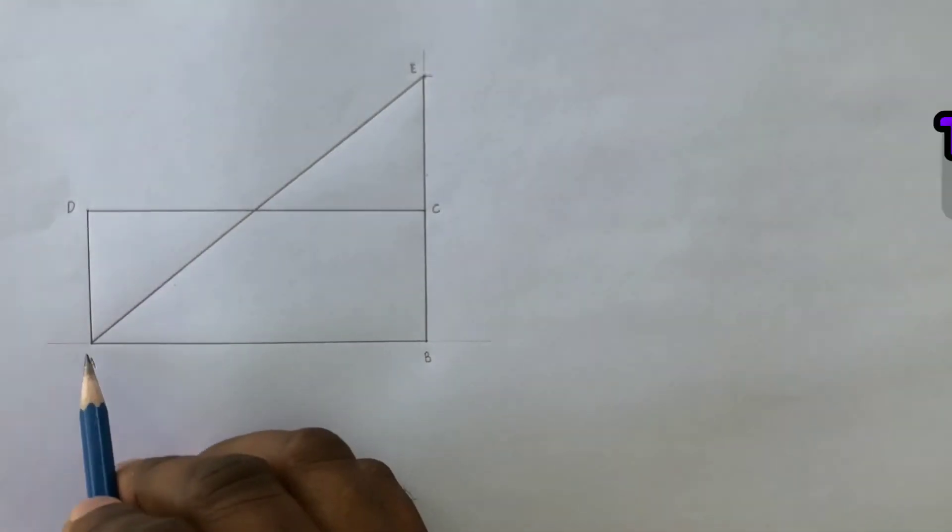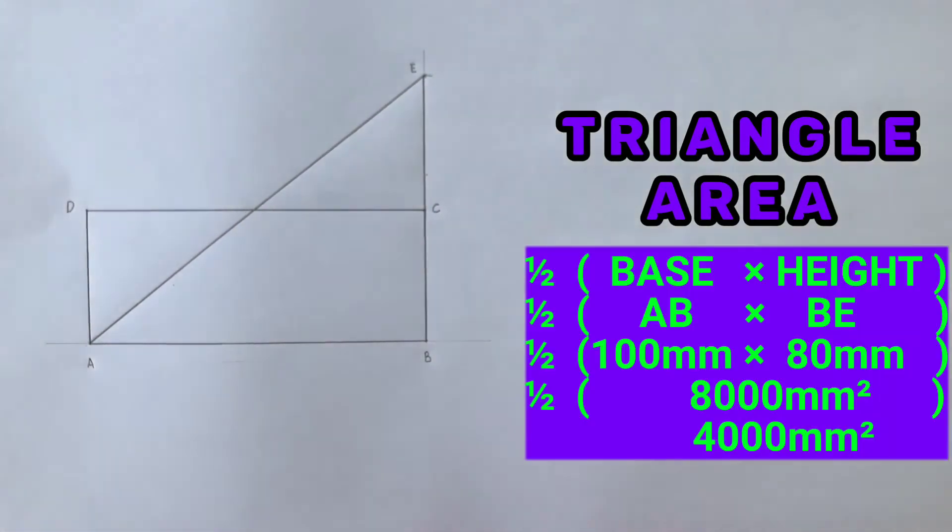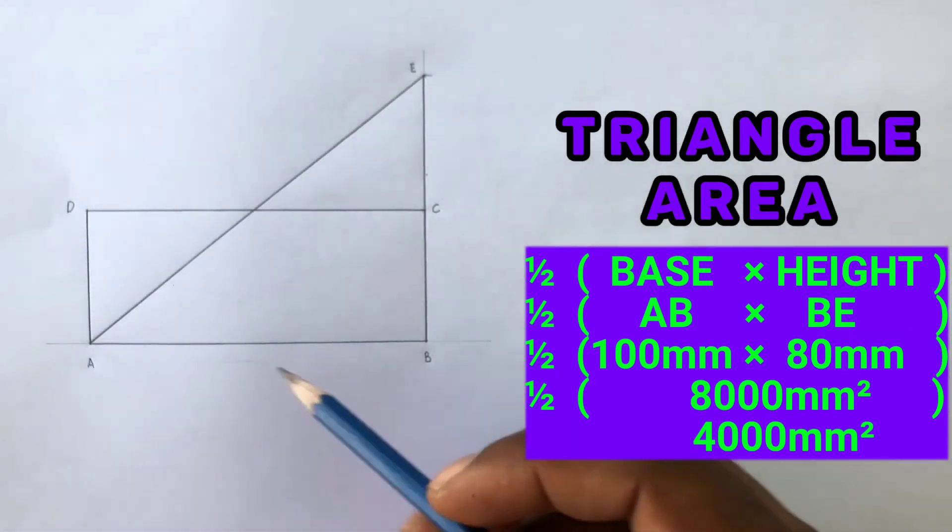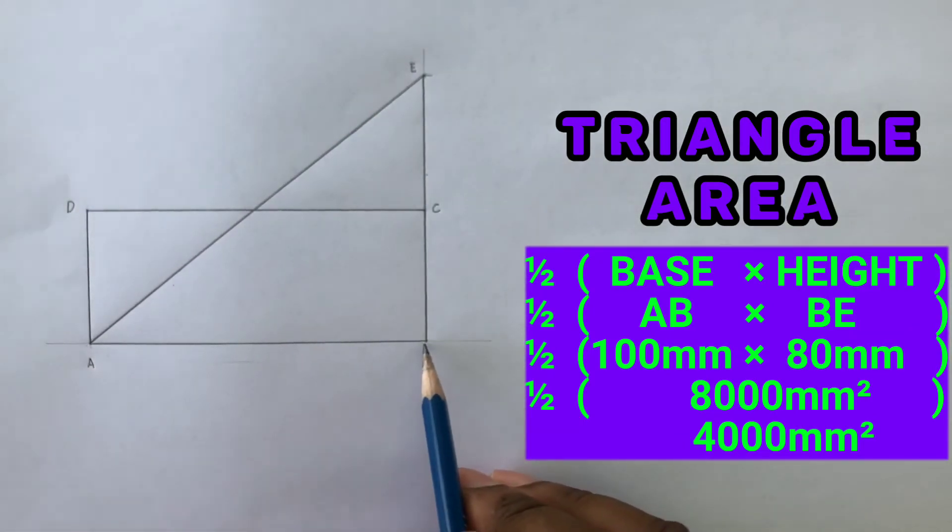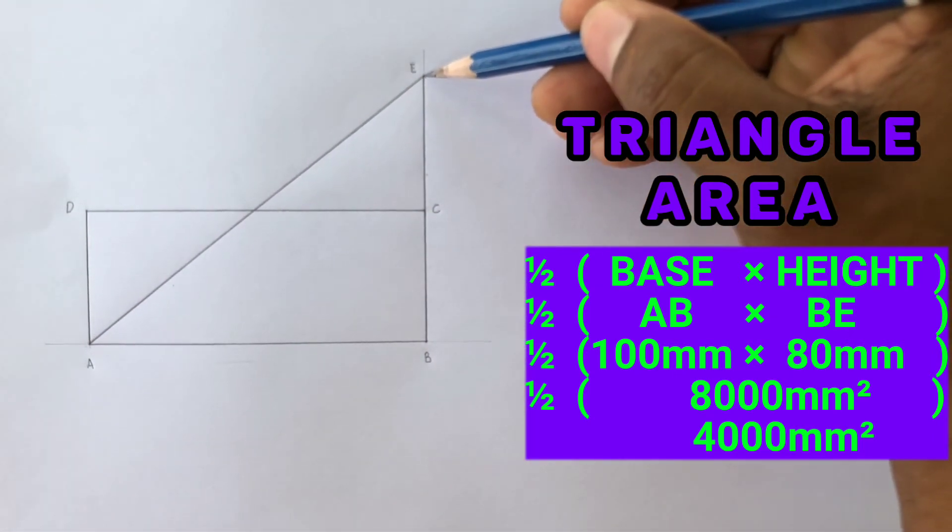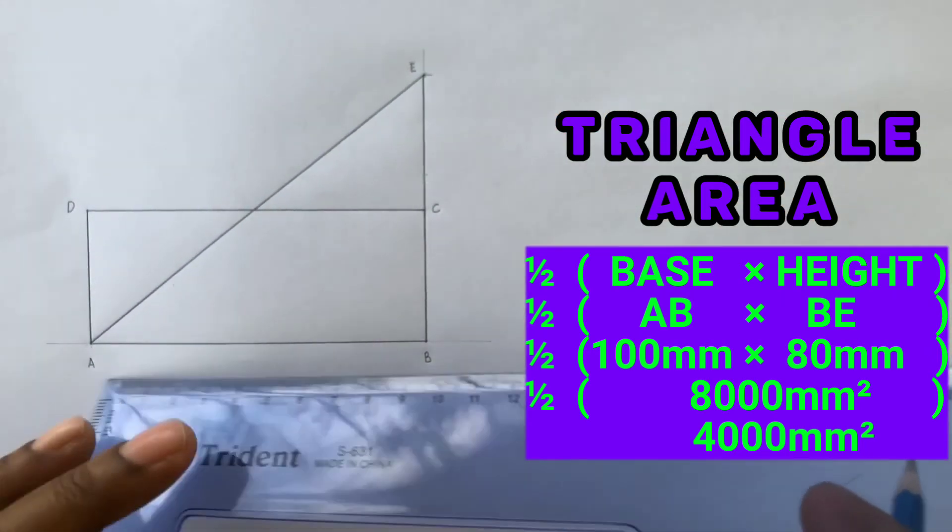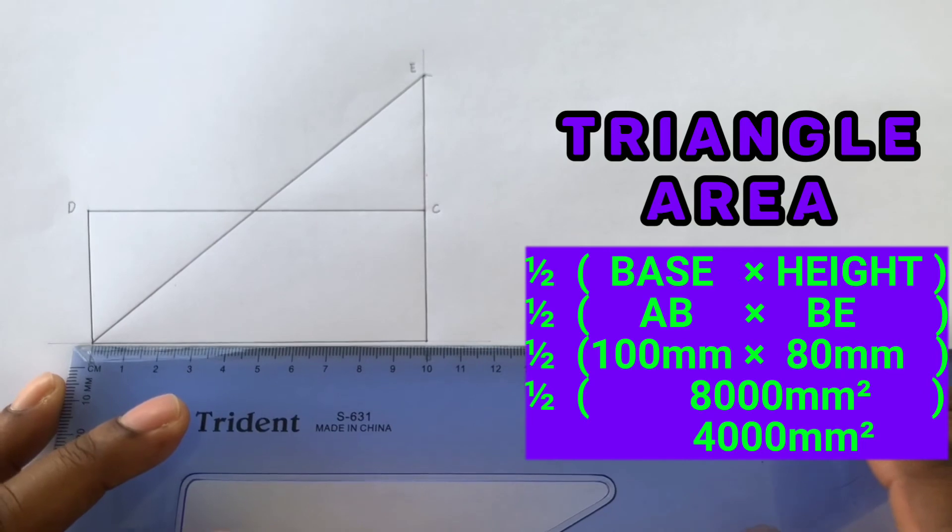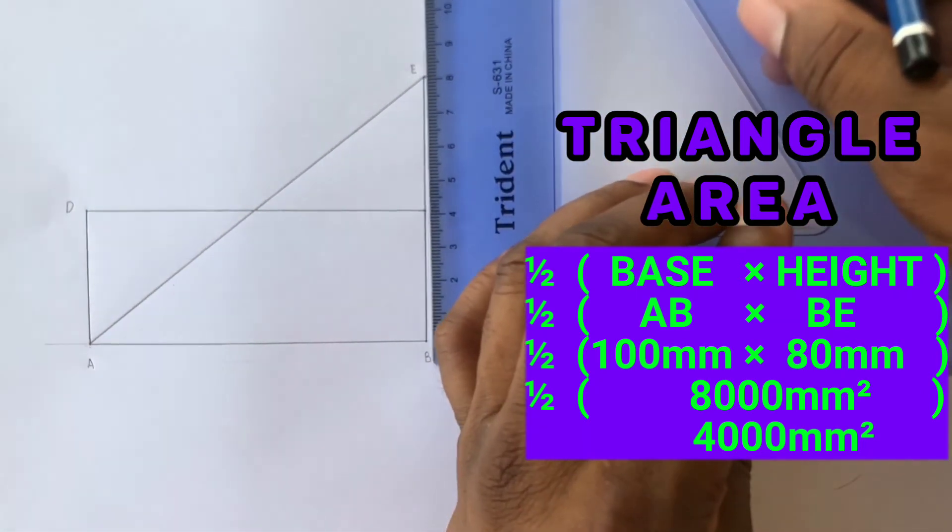Now in order for us to calculate the area of this triangle, we can use the following formula: half base multiplied by the height. The base of this triangle is AB, while BE is the height. The base measures 100 millimeters while the height is 80 millimeters.